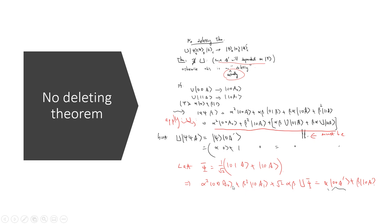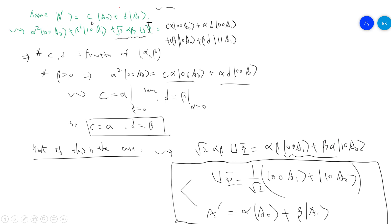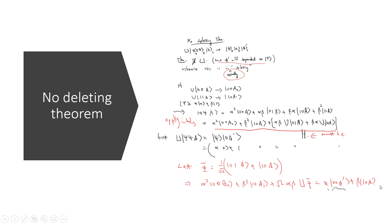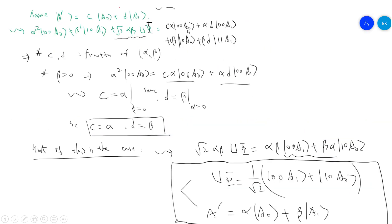Let |a'⟩ = c|a₀⟩ + d|a₁⟩. Then α²|00⟩|a₀⟩ + β²|10⟩|a₁⟩ + √(αβ)·U|φ⟩ equals α|0⟩|0⟩|a'⟩ + β|1⟩|0⟩|a'⟩. Expanding |a'⟩: cα|00⟩|a₀⟩ + αd|00⟩|a₁⟩ + cβ|10⟩|a₀⟩ + βd|10⟩|a₁⟩. Setting β = 0: α²|00⟩|a₀⟩ = cα|00⟩|a₀⟩ + αd|00⟩|a₁⟩, so c = α when β = 0. Similarly, d = β when α = 0.